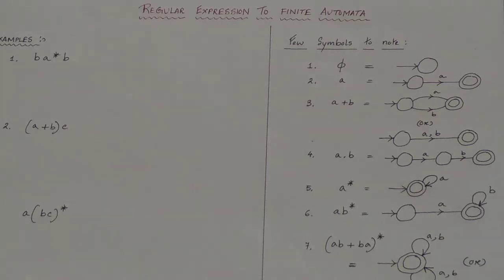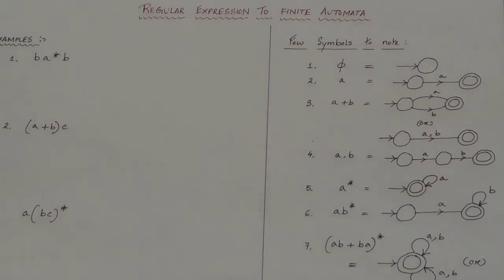Welcome to the video lecture series on Theory of Automata and Formal Languages. We are in unit two, learning about regular expressions. In this lecture, we'll be starting with the topic of how to convert a regular expression to a finite automata. In the previous lecture, we learned how to express a regular expression from a regular language; now we will construct a finite automata from a given regular expression.